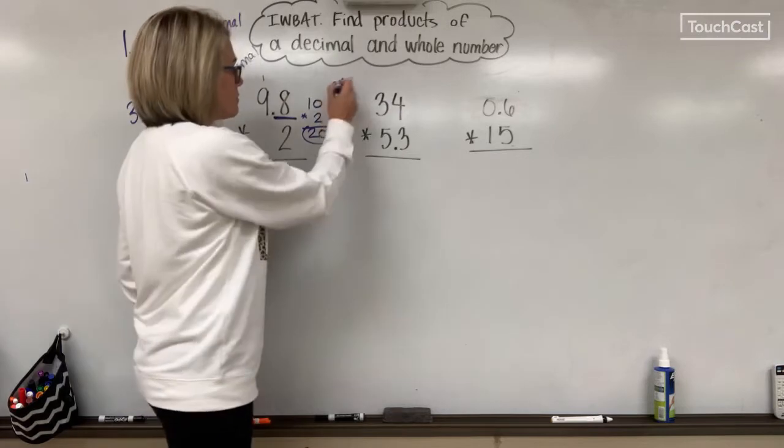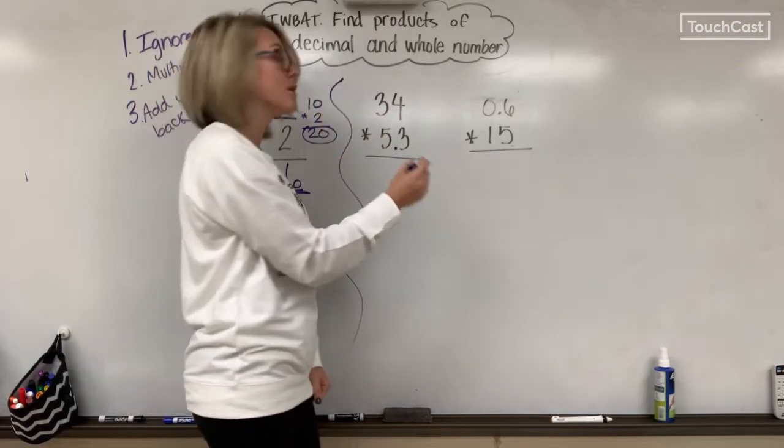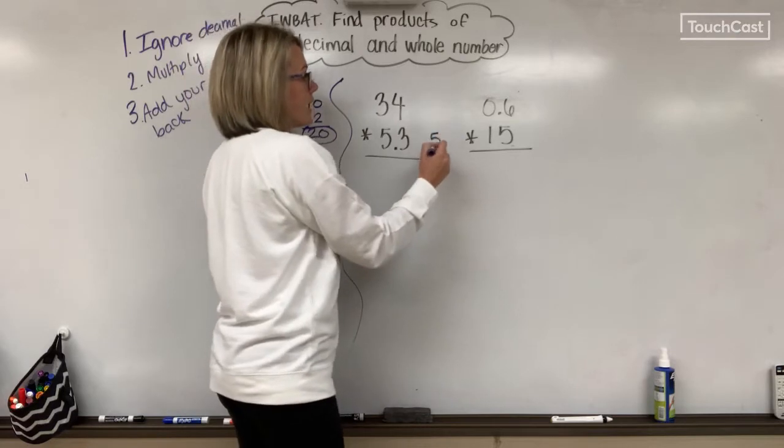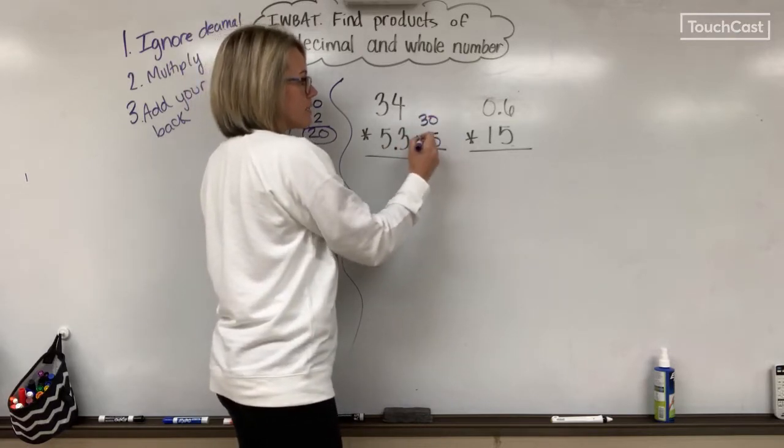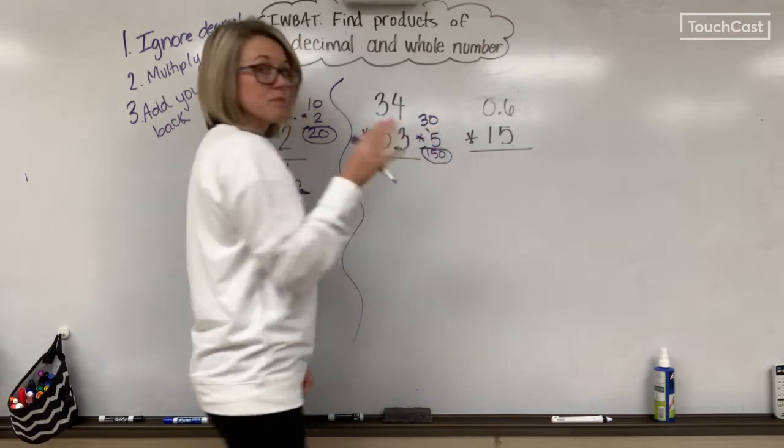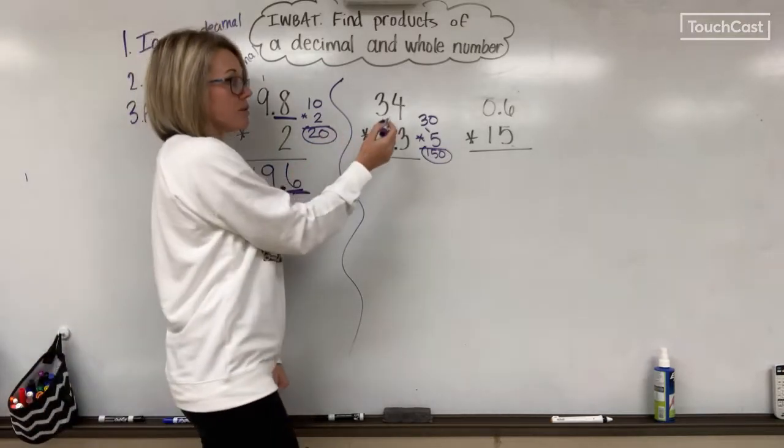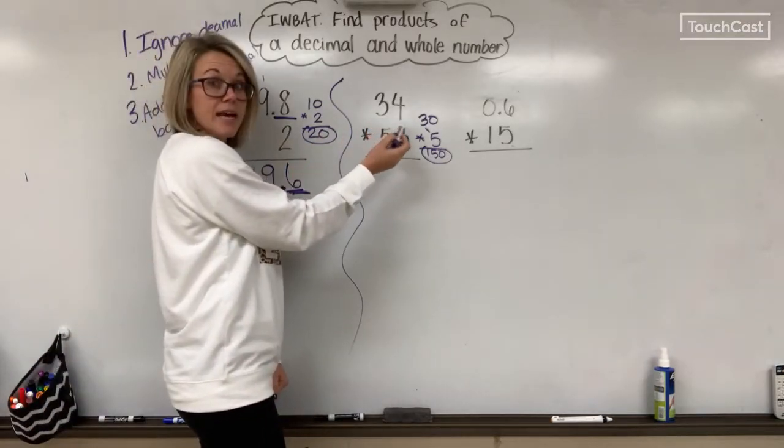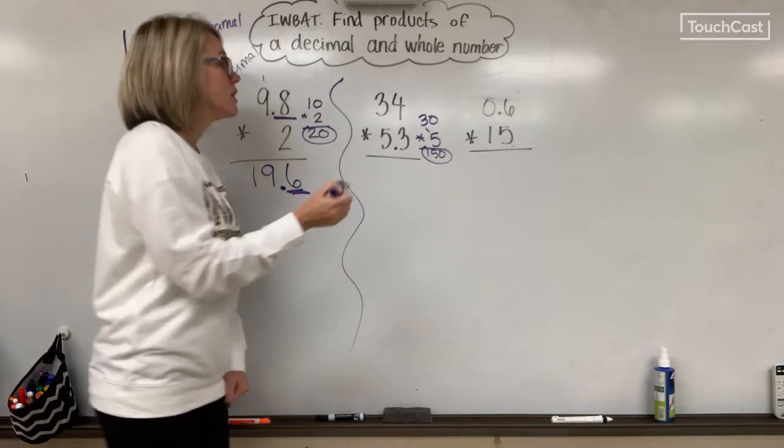Let's try the next one. I have 34 times 5.3. I'm going to round 5.3 to 5, turn 34 to 30. 3 times 5 is 15 and my 0. So my answer should be about 150, roughly 150, probably a little higher because I rounded down, so I'm going to have some extras on my real answer.